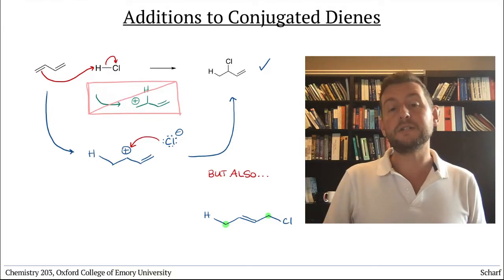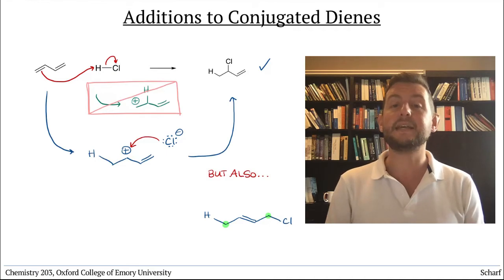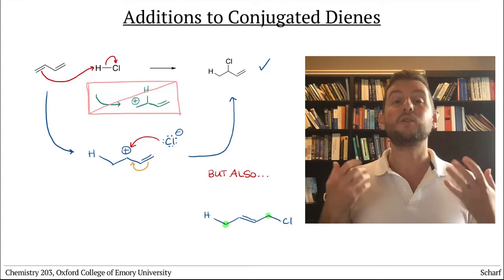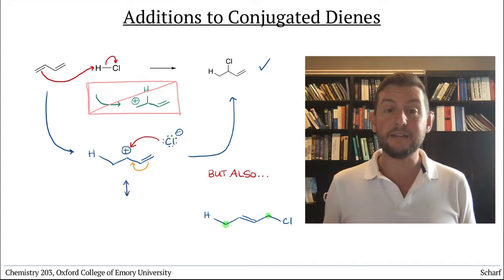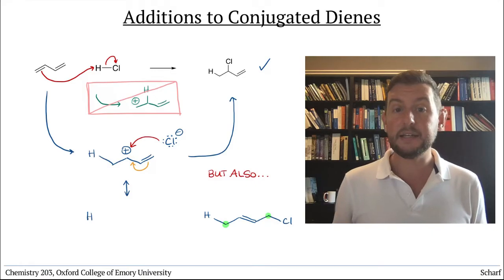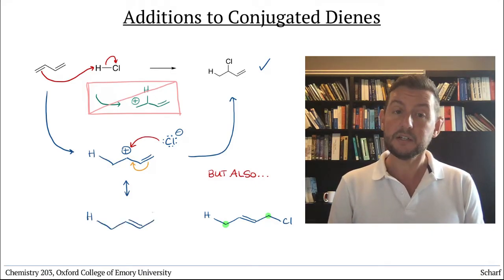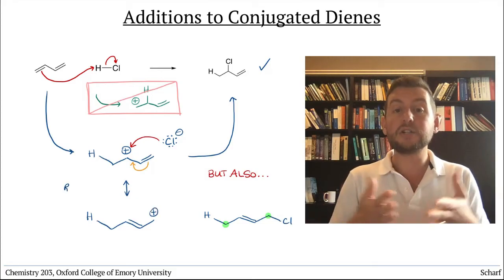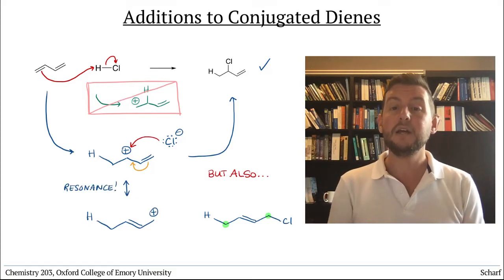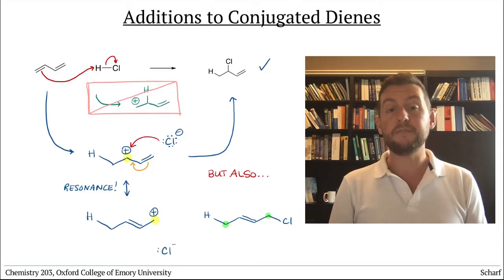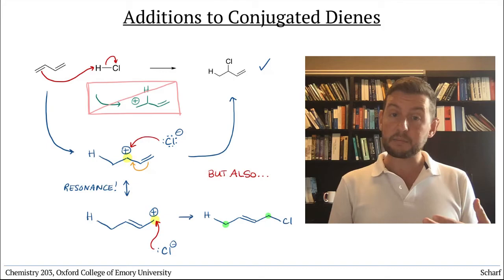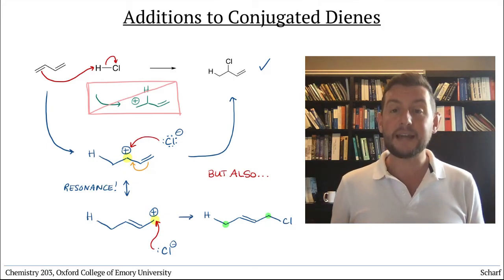In order to understand this outcome, we need to examine the intermediate we formed after the first step. The carbocation is resonance stabilized and conjugated, and if we draw its alternate resonance structure, we see that the positive charge is delocalized. It's spread out between the two carbon atoms. If the chloride nucleophile attacks this other carbon, we can understand the outcome.